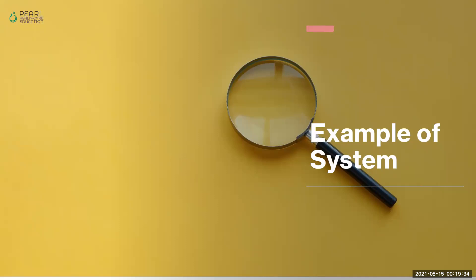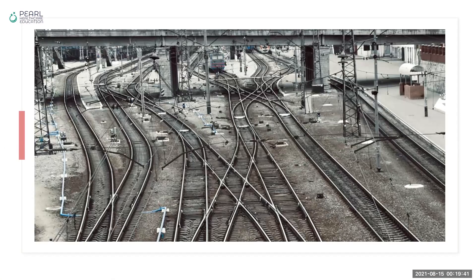There are various different examples of systems. Let's have a look at them. You must have heard of the railway network, and you can see that it is a system in which different trains are working at the same time without colliding with each other, and there is a network of rails which is managed in a way that every train is traveling on their own track.